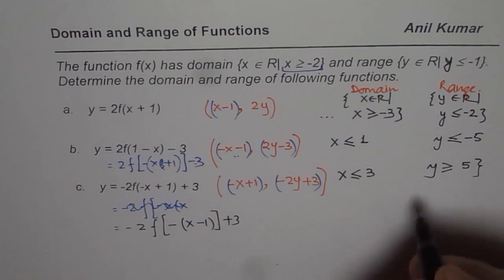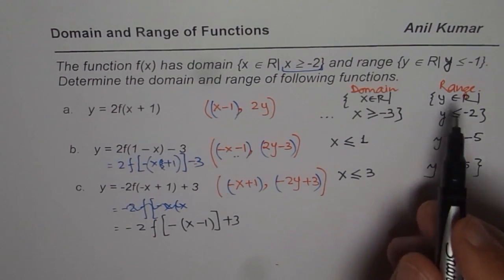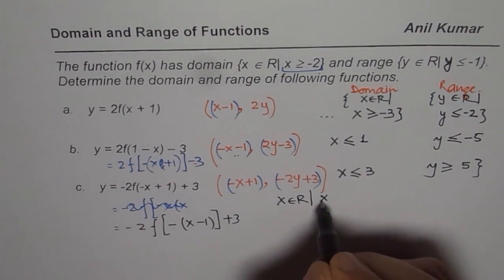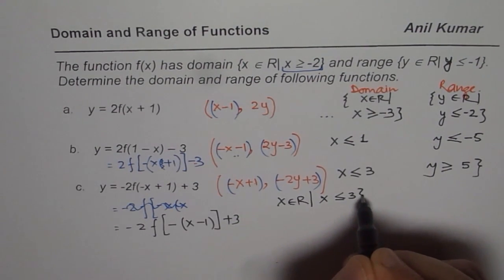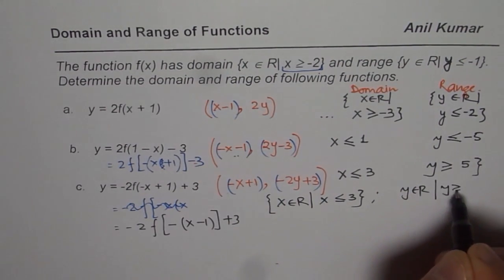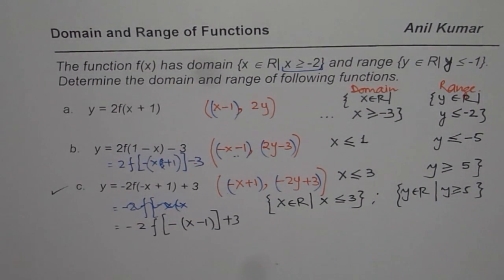So that is going to be the domain and range for our transformed functions. I hope you understand my notation — I am writing x belongs to real numbers such that x is less than or equal to 3. That is the domain. And for range, y belongs to real numbers such that y is greater than or equal to 5 for part c. So that is how we should be considering domain and range. I hope that helps — go through this video and understand how to find domain and range for restricted functions. Thank you.